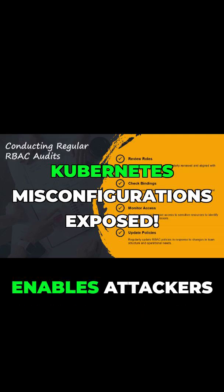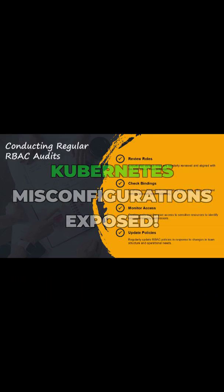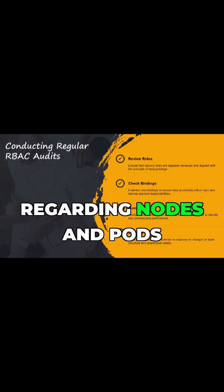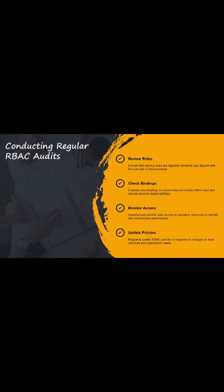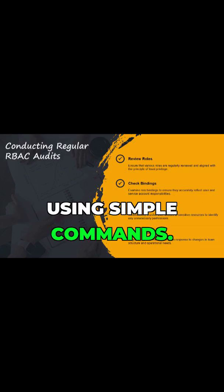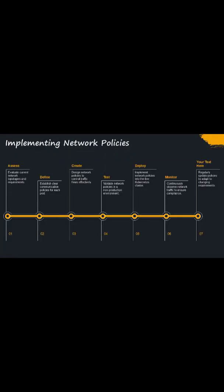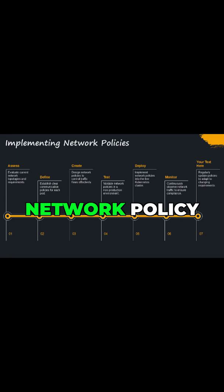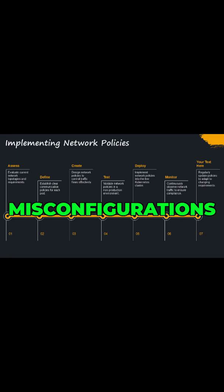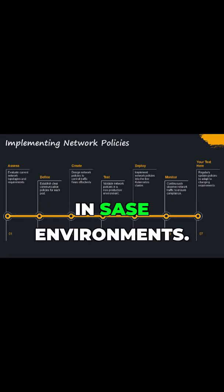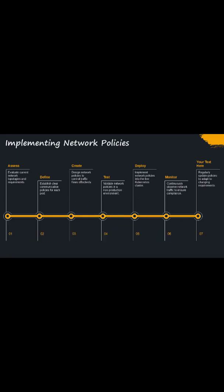This misconfiguration enables attackers to query sensitive information regarding nodes and pods using simple commands. Network policy misconfigurations further undermine Kubernetes security in SASE environments.